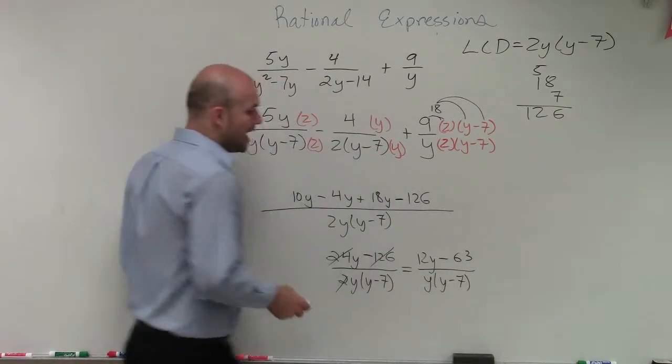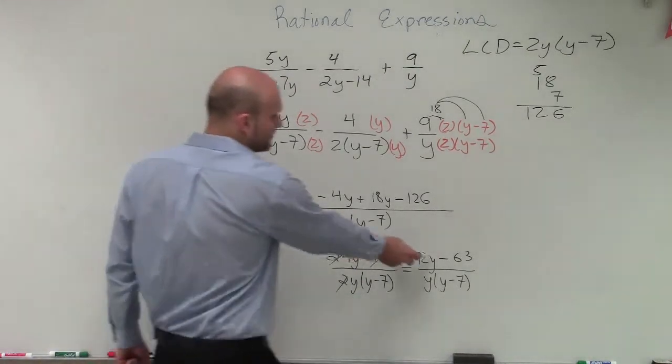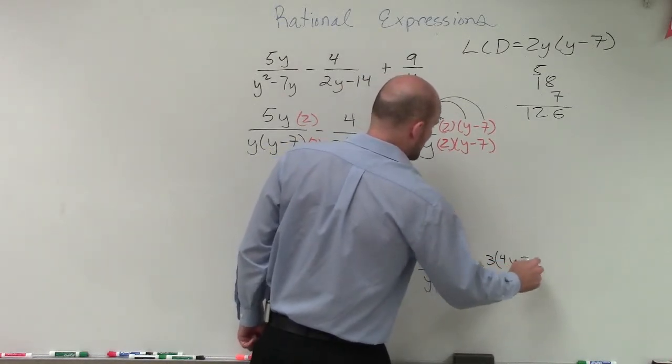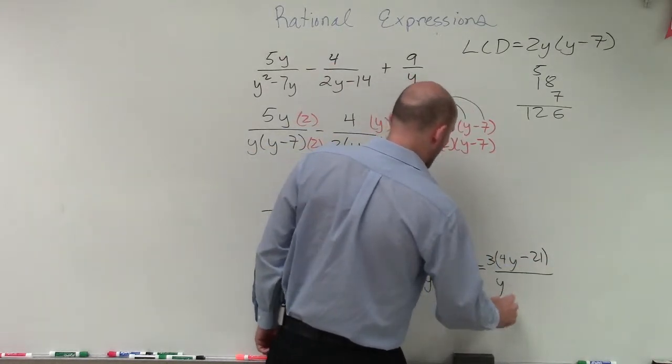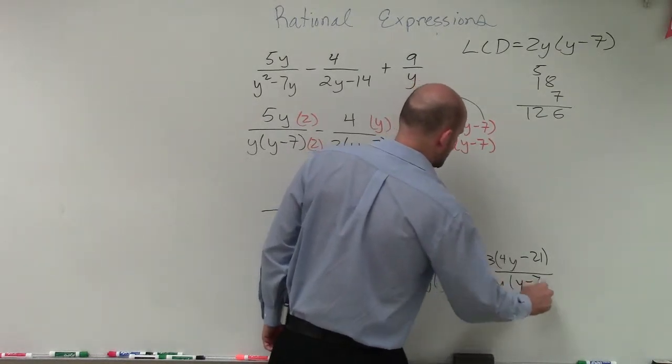Then in my numerator, I can now look at this and say, is there any common terms I could factor out? Well, yeah, you could factor out a 3. So if I factor out a 3 in my numerator, I'm left with a 4y minus 21 all over y times y minus 7.